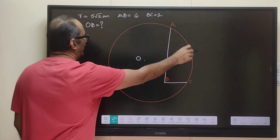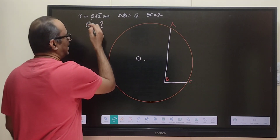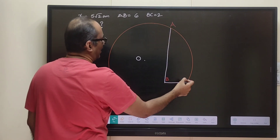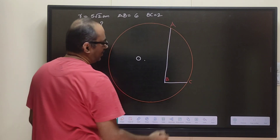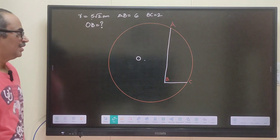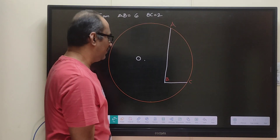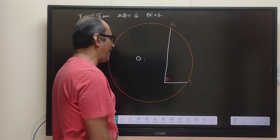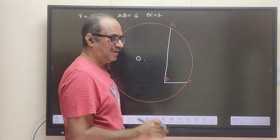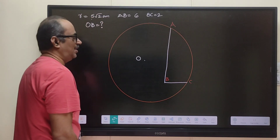Hello friends, welcome back. Hearty welcome to you. Let us look at this interesting problem. We have been given a circle of radius 5√2 centimeters, and we have also been given that AB is 6 centimeters and BC equals 2 centimeters. We need to calculate what is the value of OP.